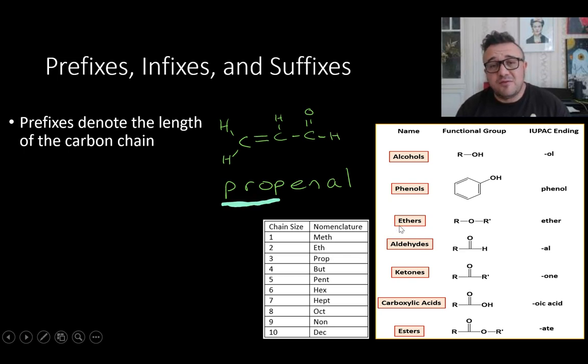All right. So the prefix, which is the beginning part of the name, that tells us the length of the main carbon chain. When we're back to caffeine, it was a purine. Purine is a particular type of aromatic, cyclo, hetero, cyclohexical compound. So generally, we're talking about straight chains for us.